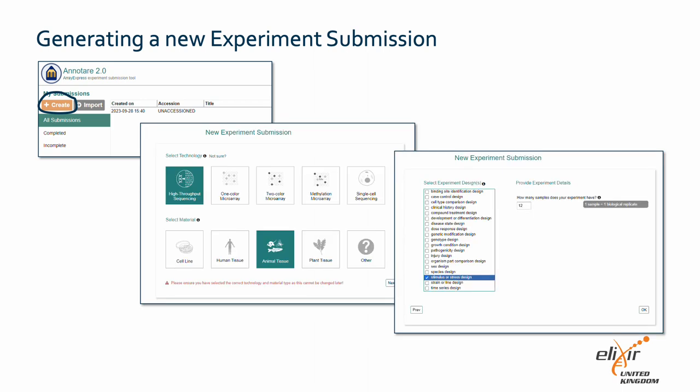A pop-up will show where you can indicate the type of experiment you wish to submit. In our example, the technology is high-throughput sequencing and the material is animal tissue. When you click Next, a new window will appear where you can identify the experimental design. In our example, we compare the effects of different diets, so we select 'stimulus or stress design.' Indicate how many samples you will be submitting — one sample is one replicate. In our example, we have three experimental conditions and four replicates per condition, so we will be submitting 12 samples.